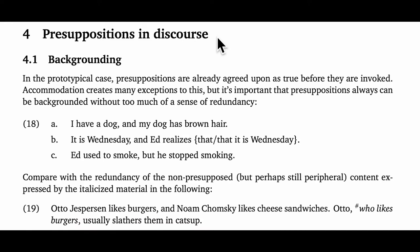To start building up these tests it's useful to consider in a more focused way how presuppositions behave in discourse. My first theme here is backgrounding. In the prototypical case, presuppositions are agreed upon as true before they're invoked. It may not be the most frequent case but it's in some sense the norm, and accommodation creates many exceptions, but it's important that presuppositions can always be backgrounded without too much sense of redundancy. For example, even for mundane things like owning a dog, it's okay to be explicit about the presuppositions, as in 'I have a dog and my dog has brown hair,' or 'It's Wednesday and Ed realizes that,' or 'Ed used to smoke but he stopped.' In all three cases the presupposition triggered in the second clause is spelled out in the first, and these things don't seem redundant.